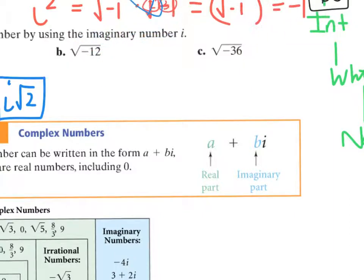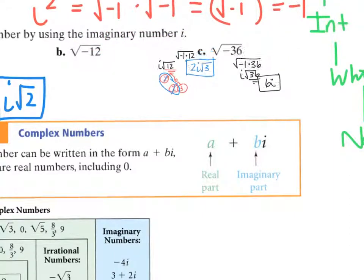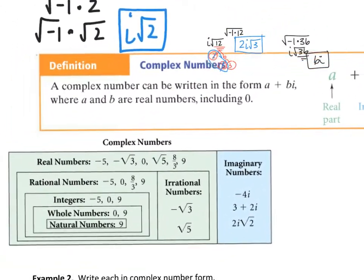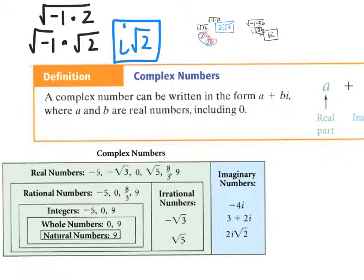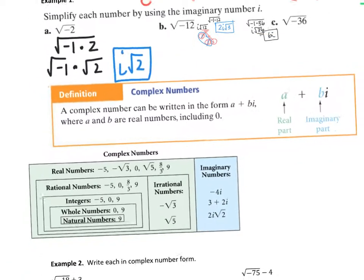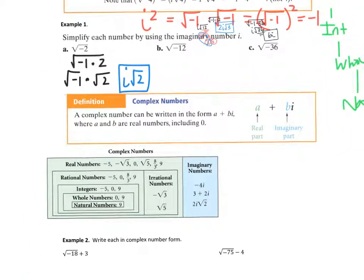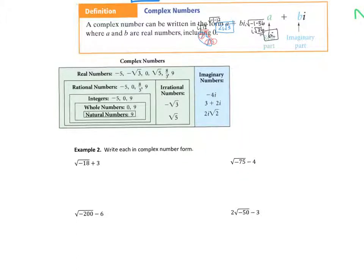Down here, this is showing the complex number system. A complex number can be written as a plus bi, where the real part you write first and the imaginary part you write second. This chart shows the hierarchy that I explained. Example 2: write each in complex number form, making sure to write the real part first, then the imaginary.